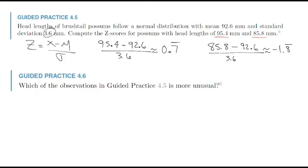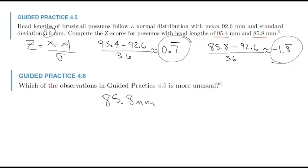I've calculated two z-scores. Which one is more unusual? The one that's more unusual is the one with the greatest absolute value, so it would be the 85.8 millimeter measurement. Negative 1.8 is farther away from the center than positive 0.7. Any questions on how to use a z-score to check how close something is to the center of the curve?